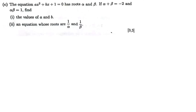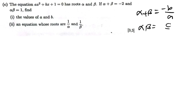We start with part 1 — they want us to find the values of a and b. We know that for roots alpha and beta, alpha plus beta is equal to negative b over a, and alpha times beta is equal to c over a. So it's just a matter of plugging in the values. Let's start.